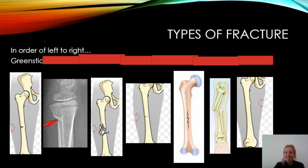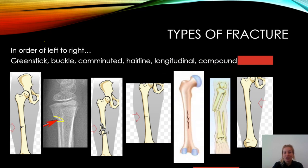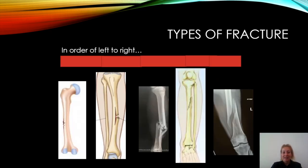The first one is greenstick. The second one is buckle — however, if you put greenstick, I can understand that because I can see how it protrudes inwards a little bit, so if you've got greenstick don't be disheartened. The third is comminuted, then a hairline — again greenstick is arguably close, however it's a very fine line so it is hairline. Then longitudinal and compound.